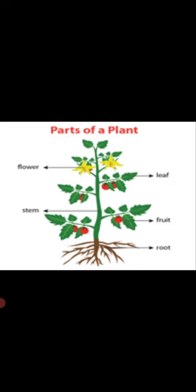Children, a plant has different parts. You may already know some parts, but today we will learn each one. The parts are: root, stem, fruit, leaf, and flower. These are the plant's parts. All the parts are important for our plant's growth. Each part performs a different function.